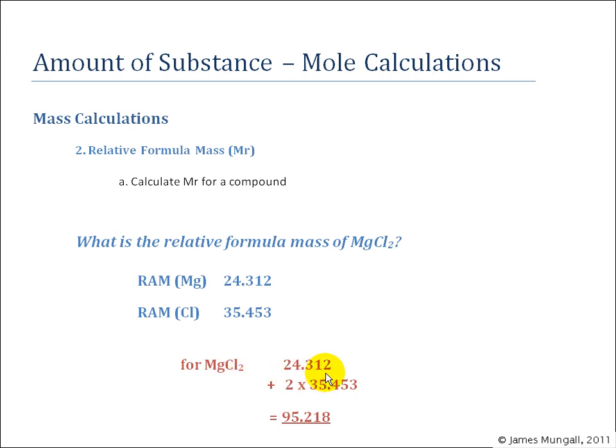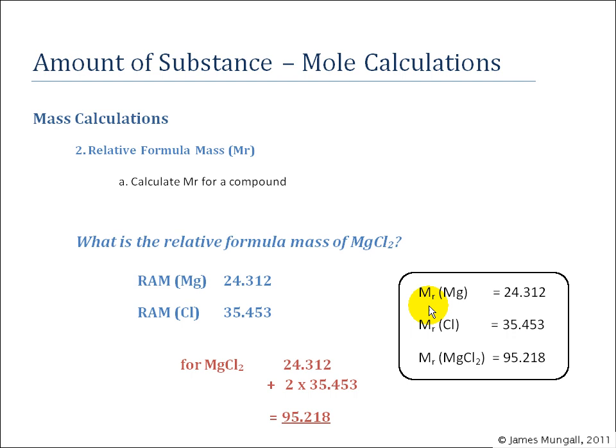we're going to need one of those Mg's, 24.312, and then two of the chlorine, so plus two times 35.453. So this 95.218 is relative formula mass of MgCl2. And just to introduce this notation,